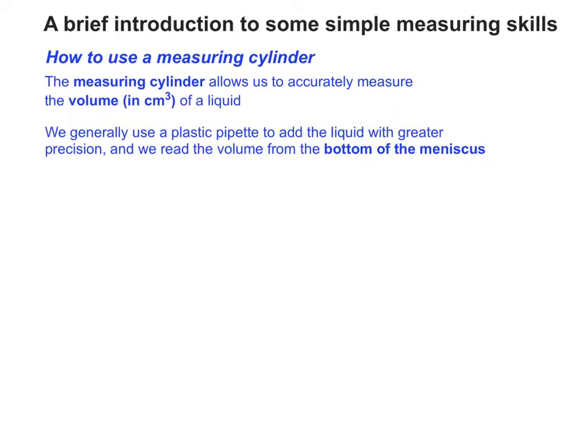There's a little bit of extra precision needed when you use a measuring cylinder, certainly at A-level. We use a plastic pipette to add the liquid with greater precision towards the end, and we also read the volume from the bottom of the meniscus.